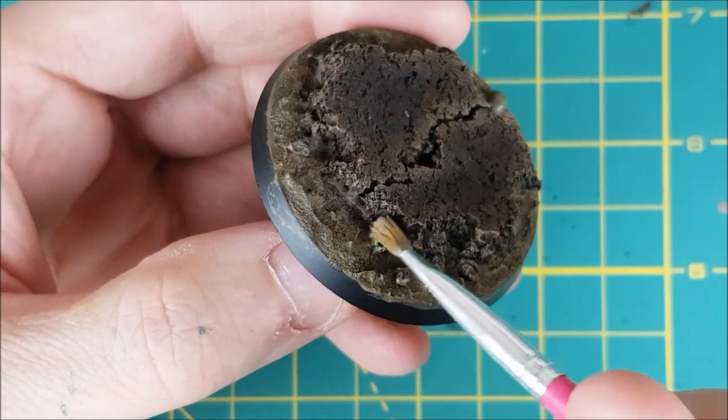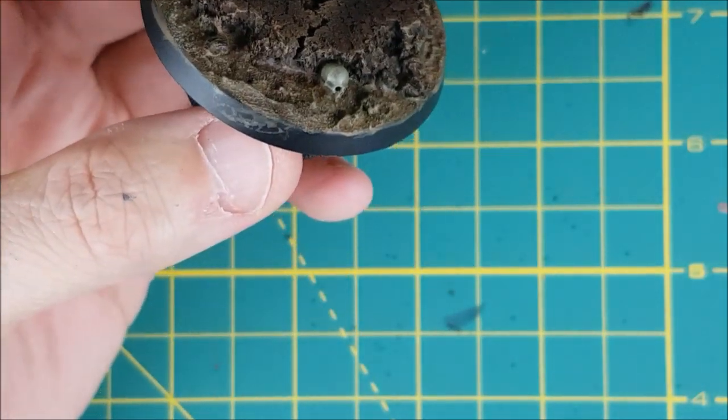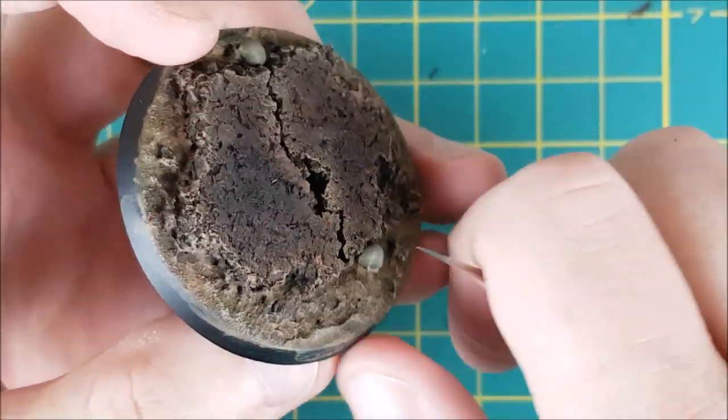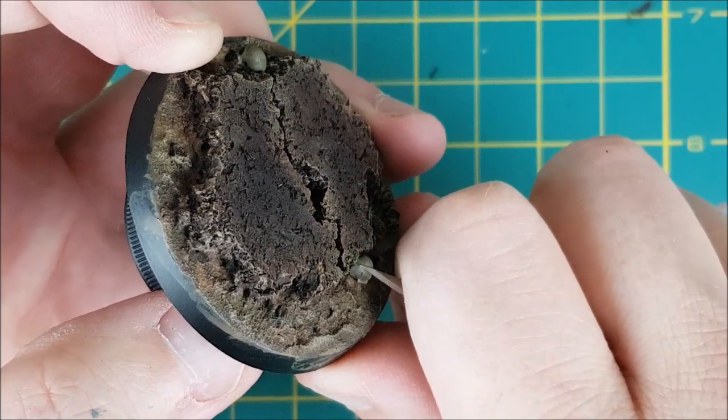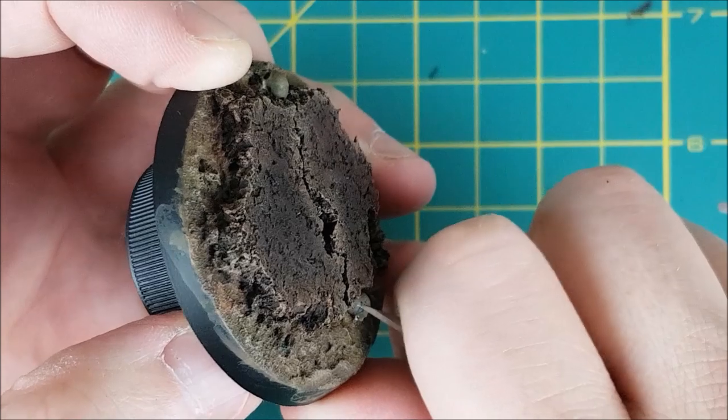The next color I'm using is German World War II Beige from Vallejo, but any khaki or dark bone color will do. I started dry brushing the skull with this, and I noticed a mold line I'd missed. It's never too late to get rid of these. I'm going to scratch this off and then give it another coat with the Death World Forest.